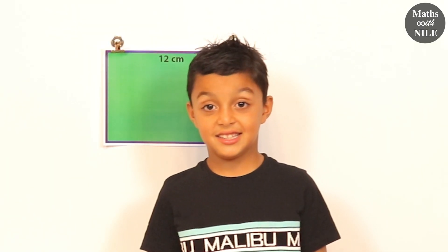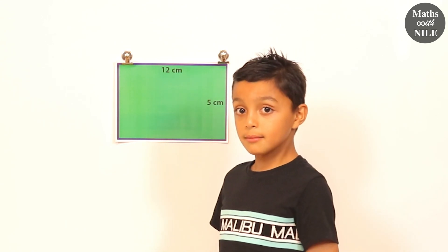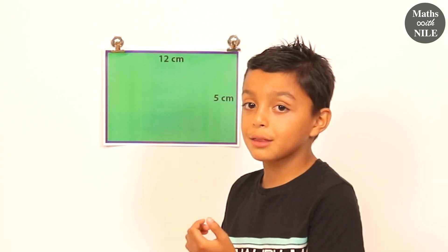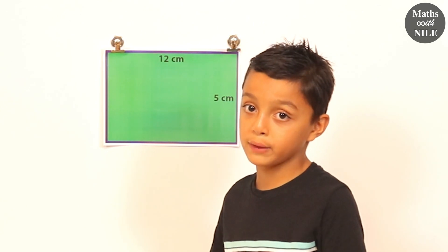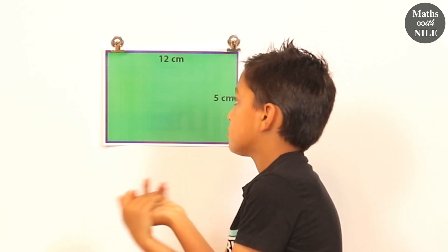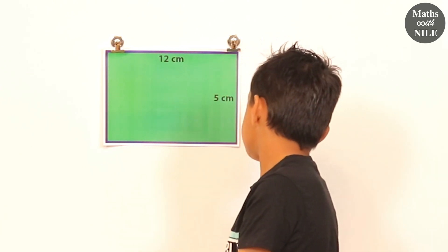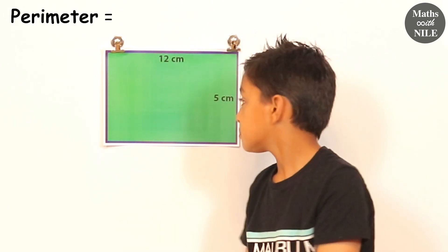Niall, what do you have behind you now? Another rectangle. Does that look like it's actually twelve centimetres and five centimetres? No. So there's something that we say in maths — not drawn to scale. What that means is it says something and that's what it means, but it's not the actual size. We've blown it up for the video, but we have to work it out as if it's exactly twelve and five.